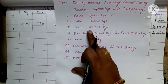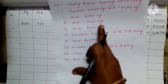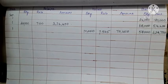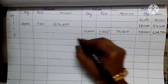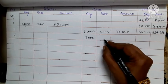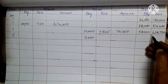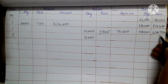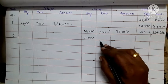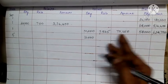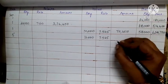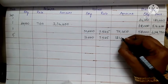Date 5: issue is 16,000 kg. The current balance amount is 4,38,750. Divide by the balance quantity of 58,000 to find the rate of 7.565. Multiply 16,000 by 7.565 to get 1,21,040.